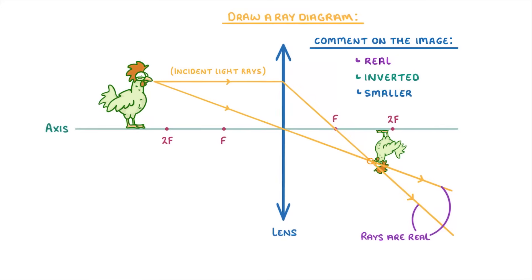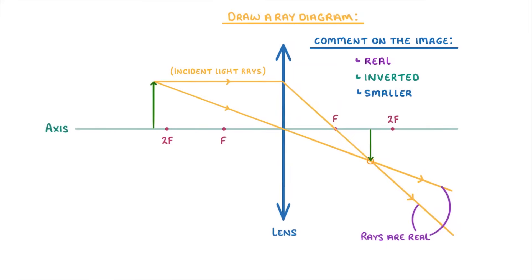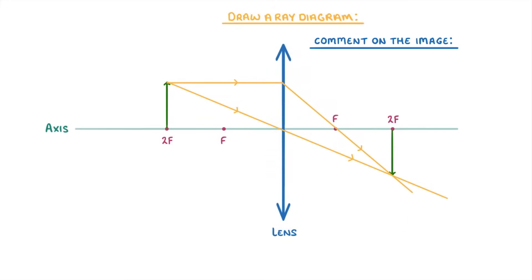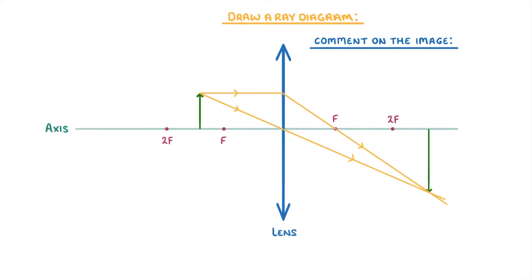Bear in mind that in your exam, you won't be given a complex object like our chicken. Instead, you'll normally be given something simple, like an arrow. Just make sure that you always draw your rays from the very top of the arrow to make sure that you get all the marks. Ray diagrams for convex lenses won't always look like this — it's only because our object here is more than two times the focal distance away from the lens. If our object was at two times the focal distance exactly, then the image would still be real and inverted, but it would be exactly the same size. Or if it was between f and 2f, then it would be real, inverted, and larger than the object.